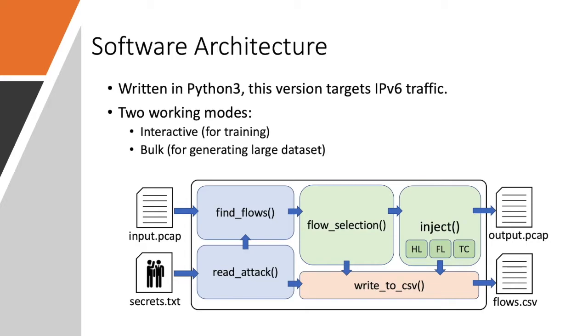So, coming to the software architecture, pcapStego is written in Python 3 and this version targets IPv6 traffic. pcapStego considers two input files that are a pcap file containing the source traffic to modify and a list of secrets or attacks to be transmitted via the covert channels. So, the pcap file is parsed and the conversations that fit the secrets are found.